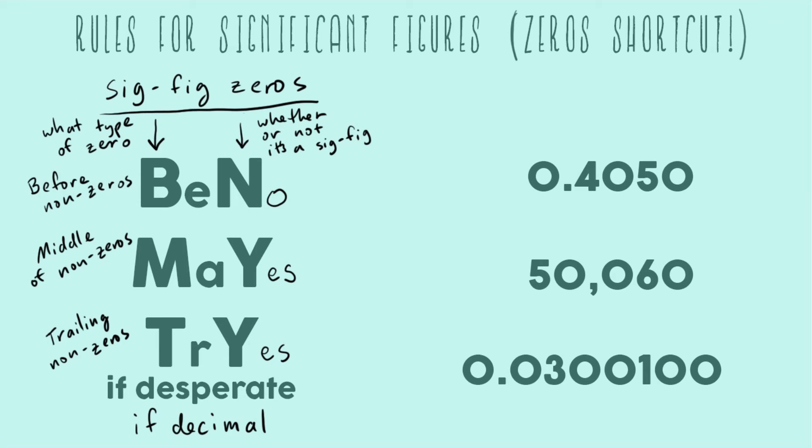So that's all of it. So before non-zeros are not sig figs. Middle of non-zeros, yes they are. And trailing non-zeros the answer is yes if there's a decimal. So Ben may try if desperate.